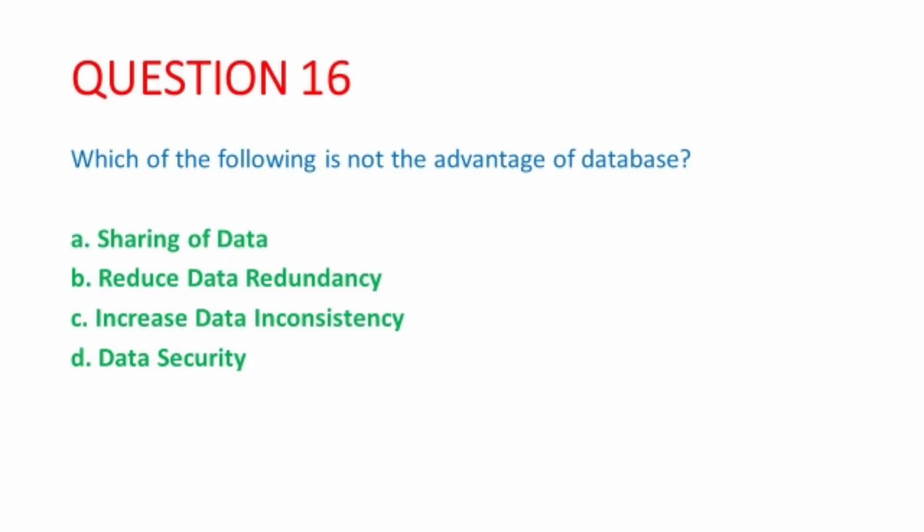Next MCQ is from the unit database management system. Which of the following is not an advantage of database? First option, sharing of data, this is an advantage. Reduced data redundancy means duplicacy of data is reduced. Yes, it is also an advantage. Next is increased data inconsistency. Data inconsistency means mismatching copies of the same data. If one student's marks are 30 and in the other table marks are 40, this is called data inconsistency. Database does not increase this. So this is not an advantage of database. This is the correct option.